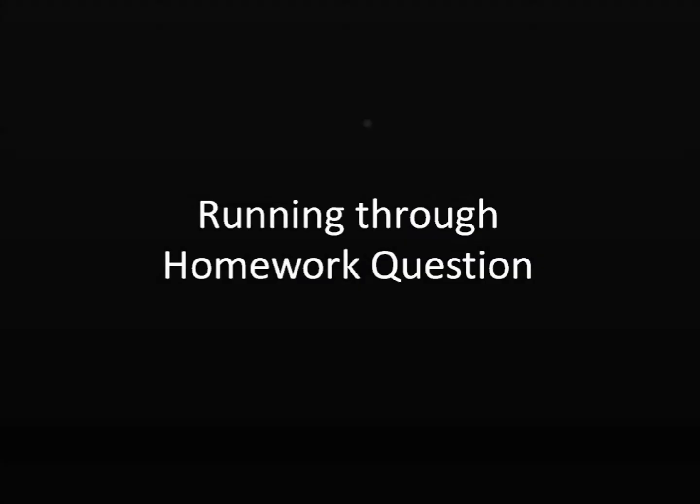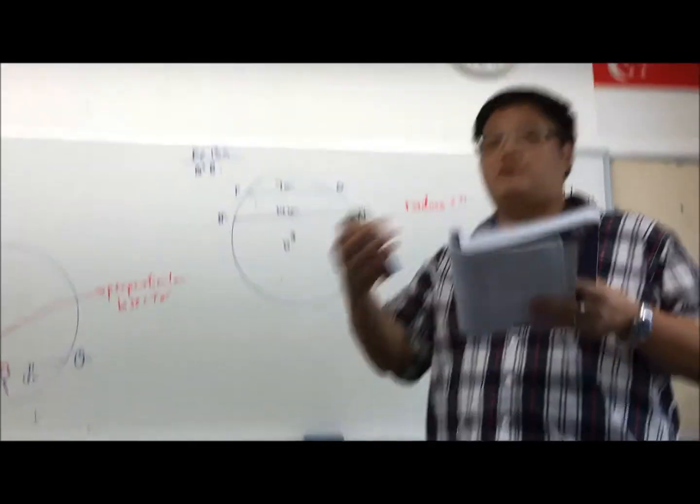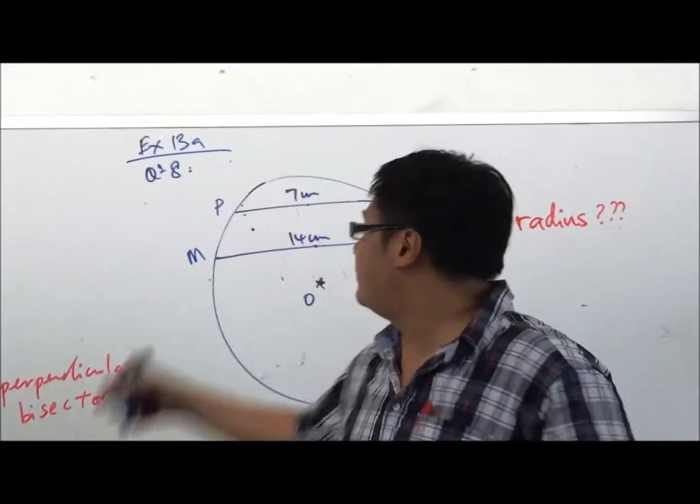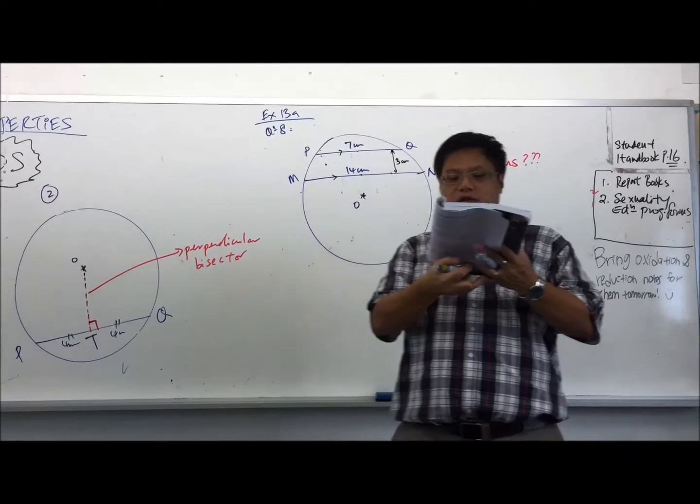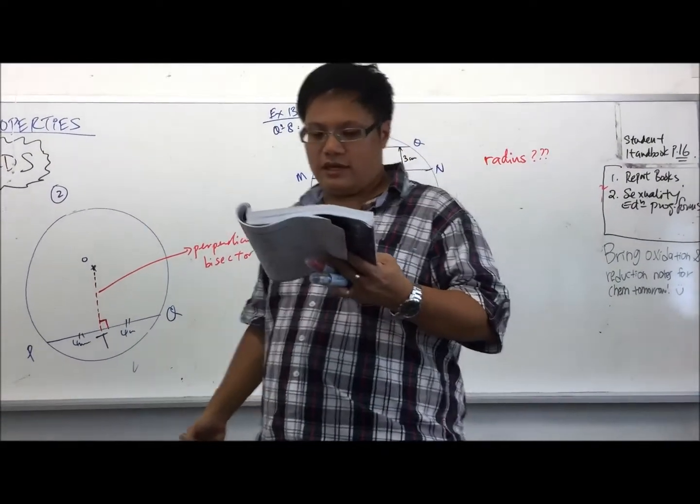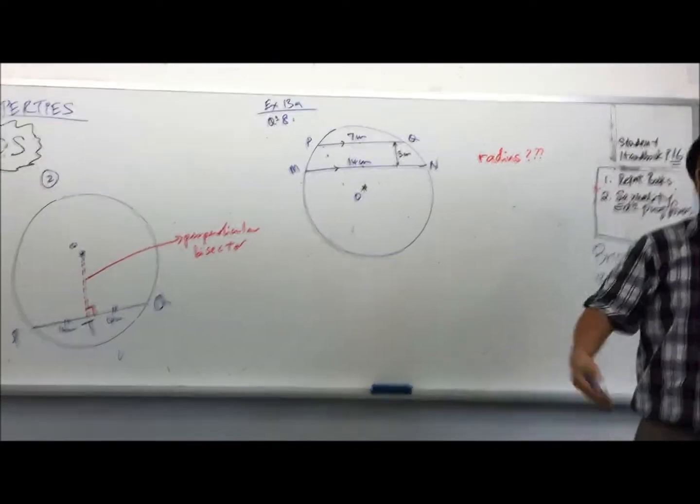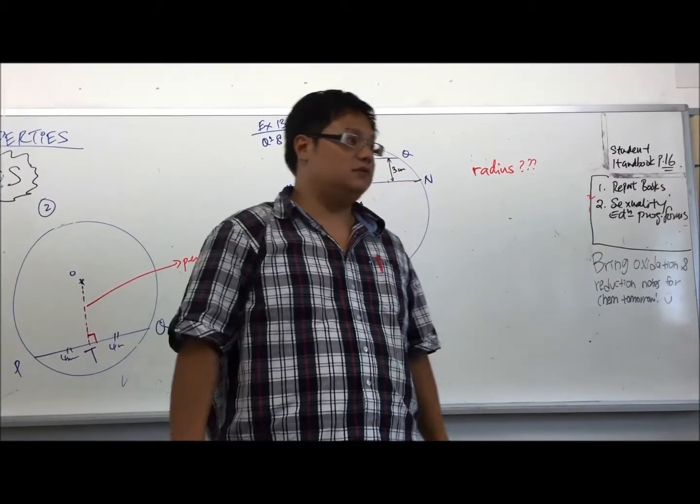Let me read out the question to you first. It goes something like this. Two parallel chords, PQ and MN, they're parallel. They are 3 cm apart, lying on the same side of a circle. PQ is 7 cm, MN is 14 cm. So the question says, can you calculate what is the radius of this circle?